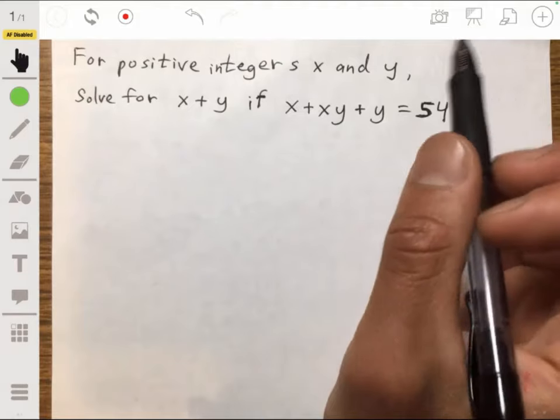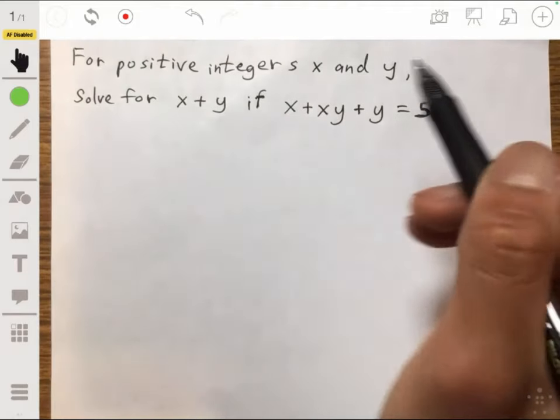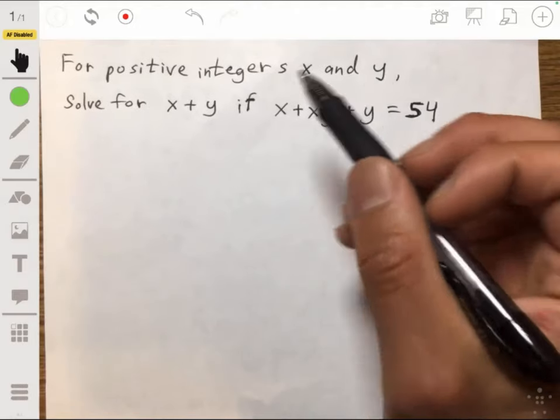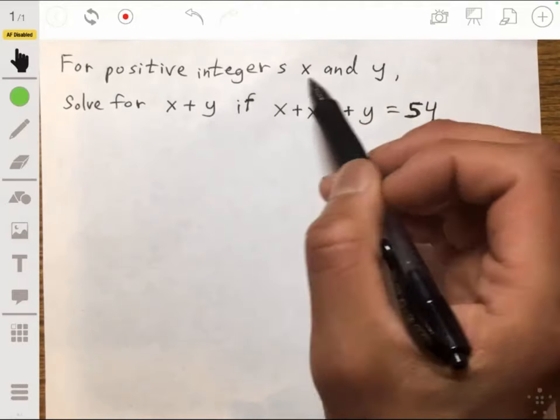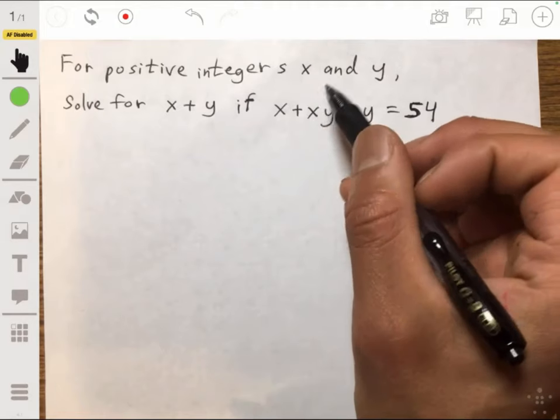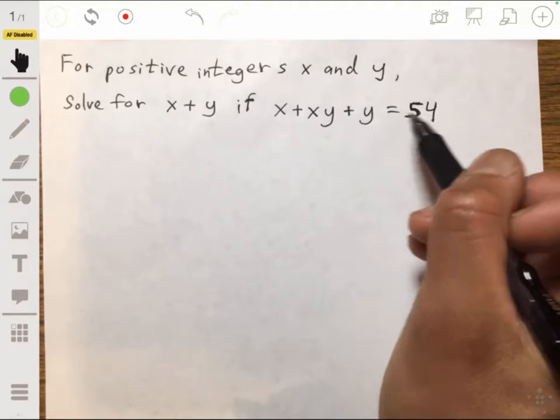All right, so this problem we're going to solve for x plus y, and we're told that x and y are both positive integers, and that we have the equation x plus xy plus y is 54.